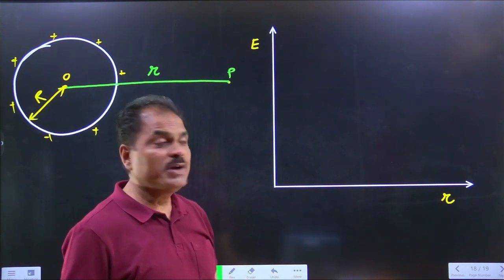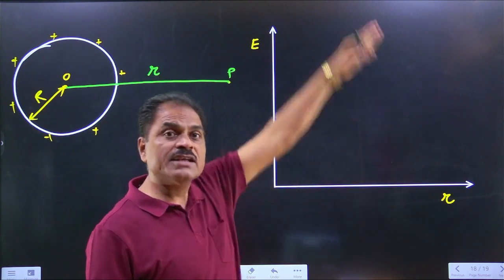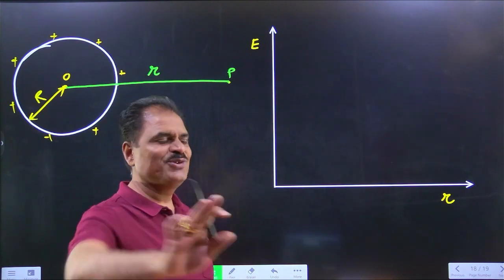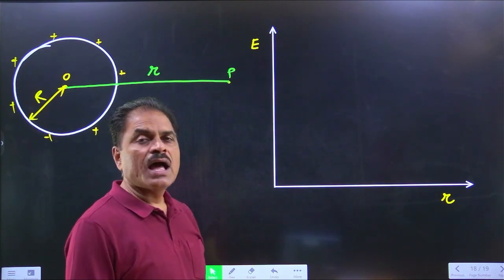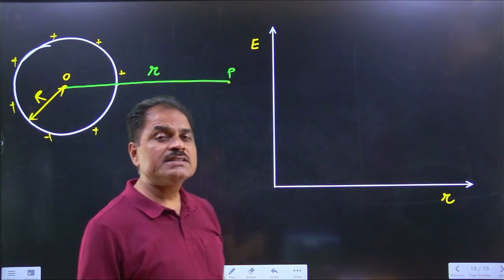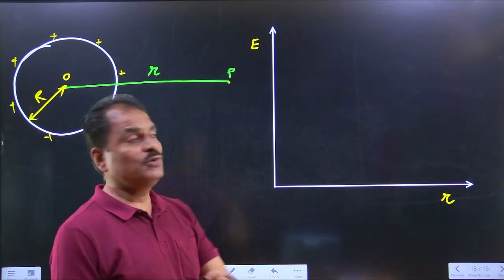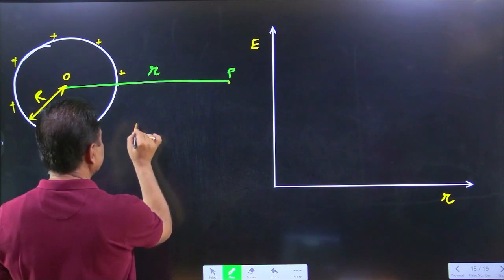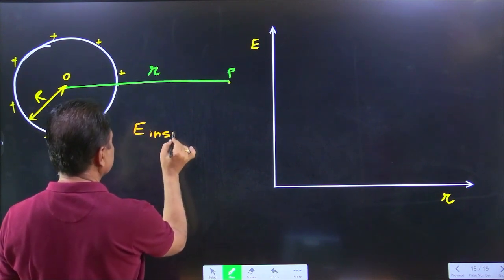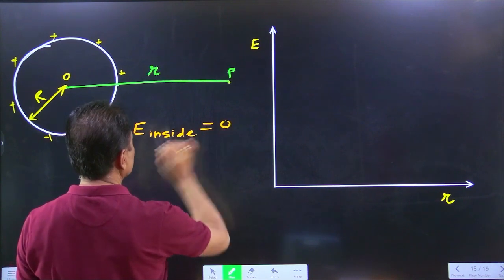How much is electric intensity if the point is at infinity? It is zero. Very good. How much is electric intensity inside the conductor? Zero. Electric intensity inside the conductor is equal to zero.